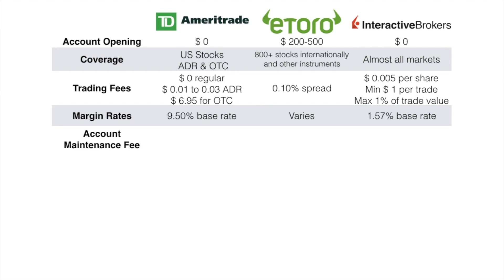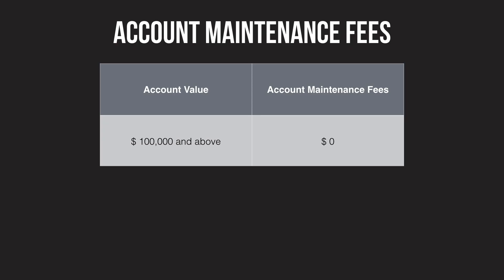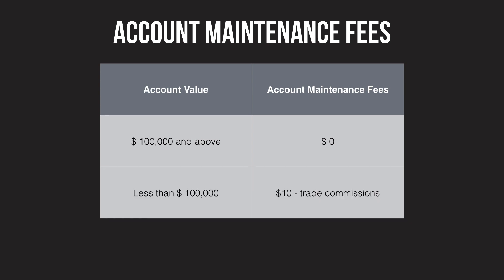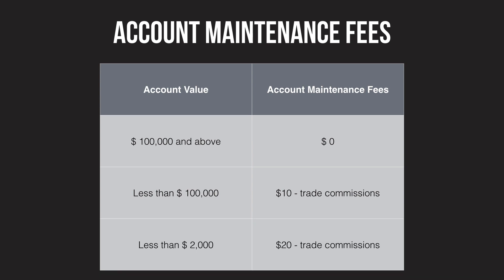For account maintenance fees, TD Ameritrade has none. For eToro, if you don't touch your account for 12 months, you will incur a $10 per month maintenance fee. IBKR has monthly account maintenance fees: no fee if your account value is over $100,000; $10 less trade commissions if between $2,000 and $100,000; and $20 less trade commissions if under $2,000.